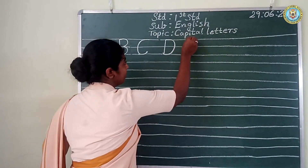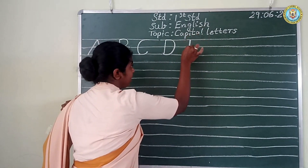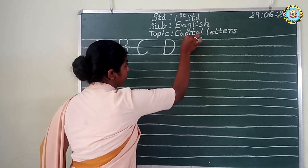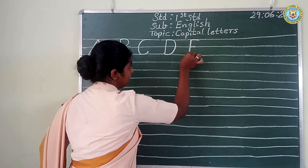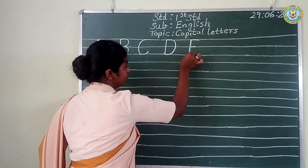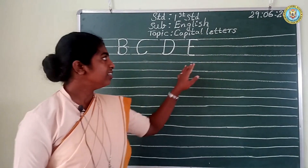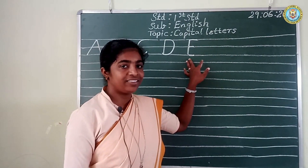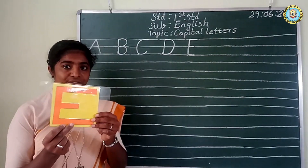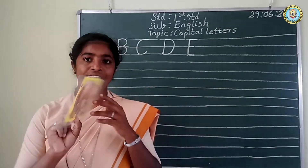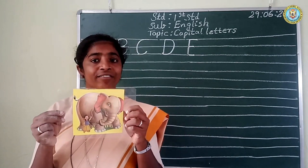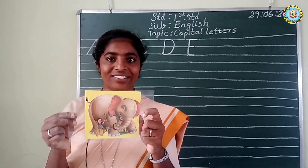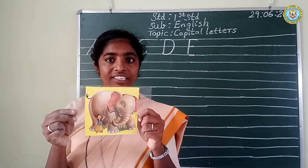Next. The straight line and the sleeping line. Say again — last line, the sleeping line. E. Repeat after me. E. E for elephant. E for elephant. Have you all seen an elephant, children? Where have you seen? You have seen in the forest and in the zoo.